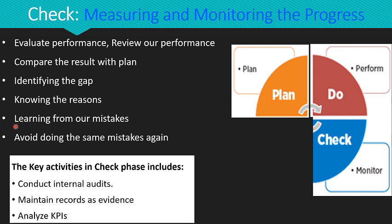The main point is to identify the reasons behind any discrepancies. The check stage is all about learning from our mistakes — understanding what went wrong helps us avoid repeating the same errors in the future. Key activities in the check phase include conducting internal audits to check adherence to the plan, maintaining records as evidence of compliance, and analyzing key performance indicators to assess whether there is improvement.